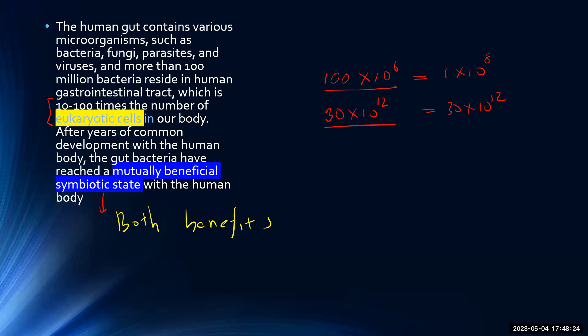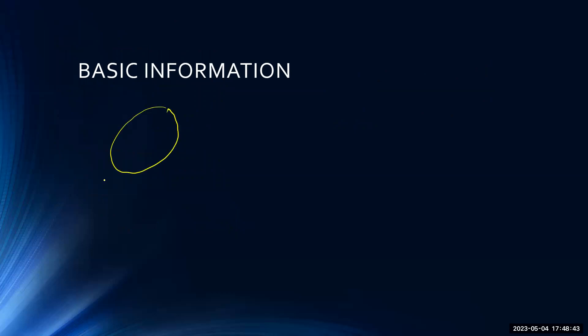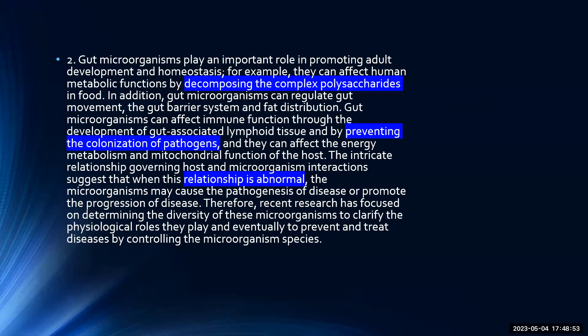We should have background knowledge of what eukaryotic and prokaryotic cells are, who the parasites are, and what a symbiotic relationship is — basic things we can learn from this paragraph. You should revise bacteria, prokaryotes, how they look, and what their structures are. It's important to revise a little bit.